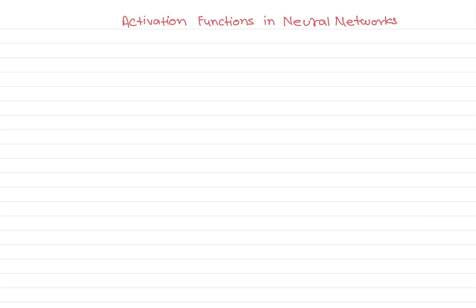Welcome back to this new lesson. In this lesson, I'm going to show you what activation functions are in a neural network, how you can use them, and how their derivation matters in deep learning. There are two types of activation functions in neural networks: linear and nonlinear. We will mostly be talking about the nonlinear activation function.